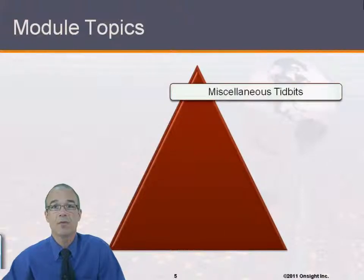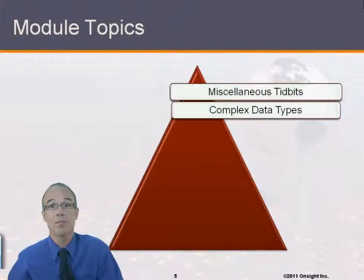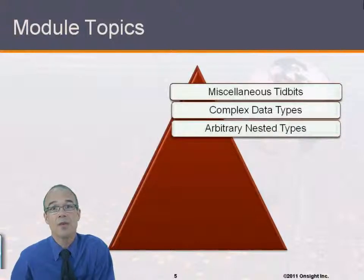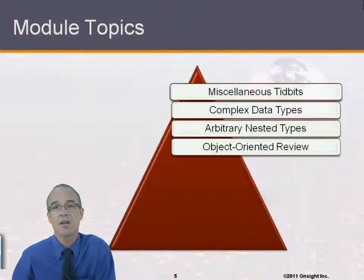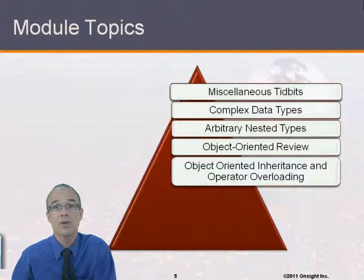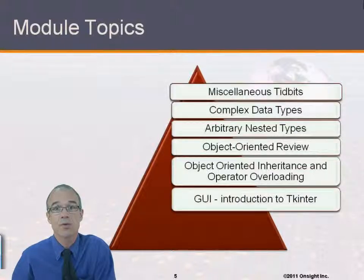The topics are, we'll start with some miscellaneous tidbits. This is going to discuss things like name parameters and lambdas and generators and some other fun things. Then we'll talk about some complex data types from very simple ones like list of lists through arbitrarily complex data types. Those arbitrary nested types can be multi-layered. Then we talk about object-oriented as a review. We talked about it a little bit in the basic introduction class. And then we'll move on to talk about more detailed and advanced topics in object-oriented, such as inheritance, operator overloading, and so on.